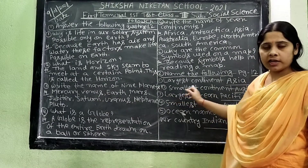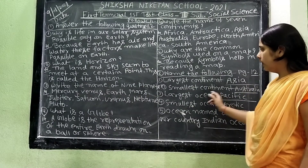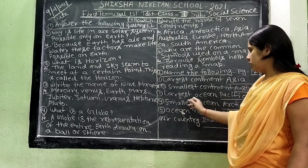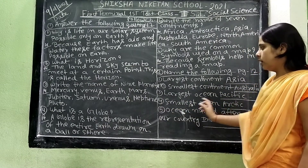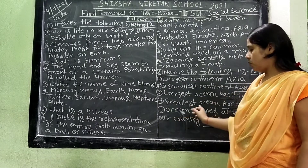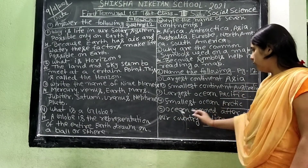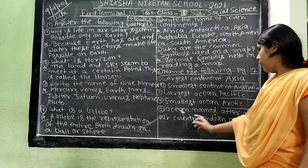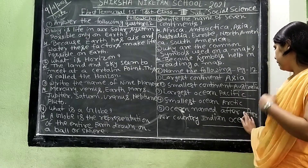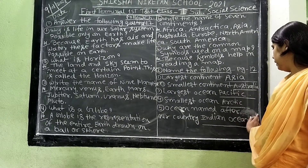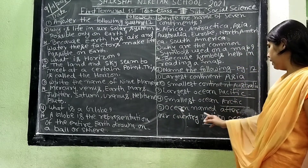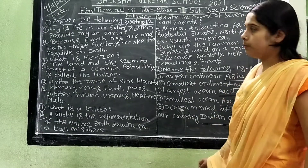Matter number 2. Number 2: Smallest continent — Australia. Number 3: Largest ocean — Pacific. Number 4: Smallest ocean — Arctic. Number 5: Ocean named after our country — Indian Ocean.